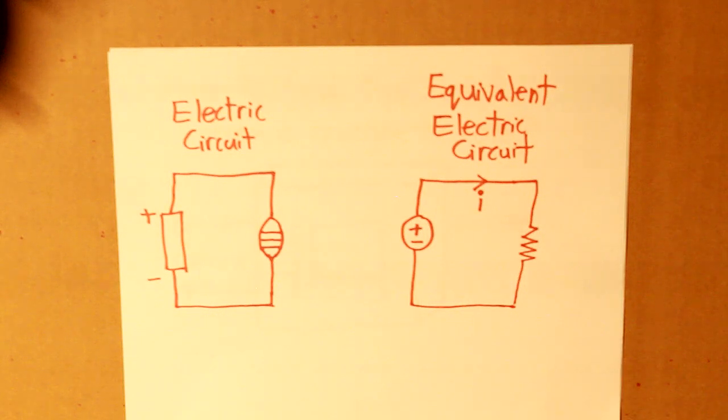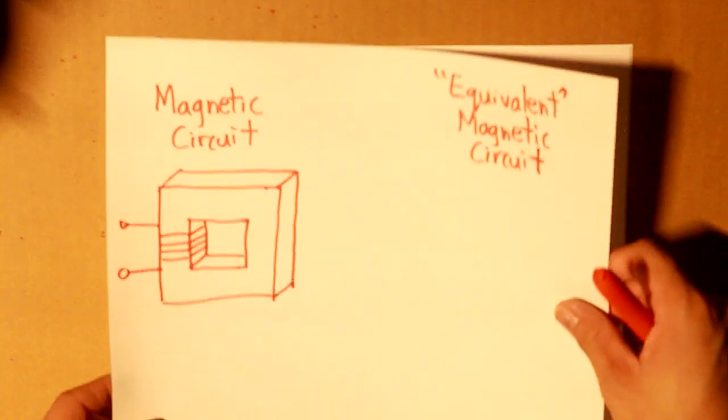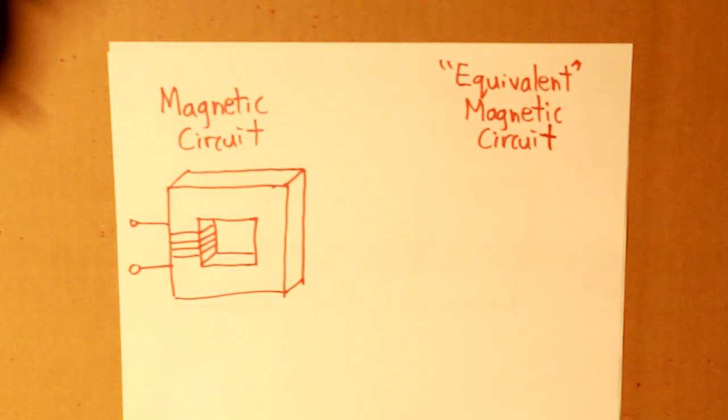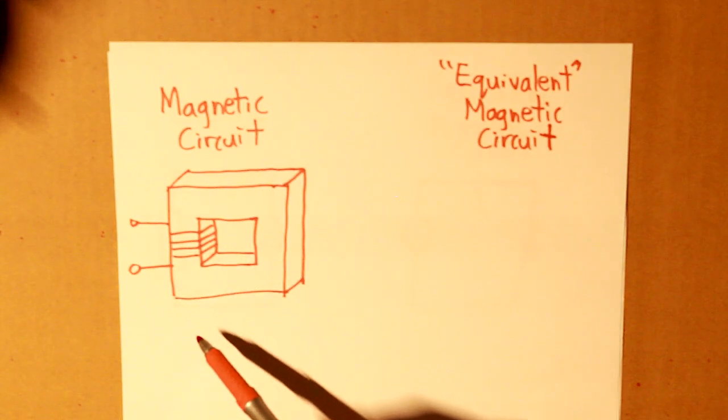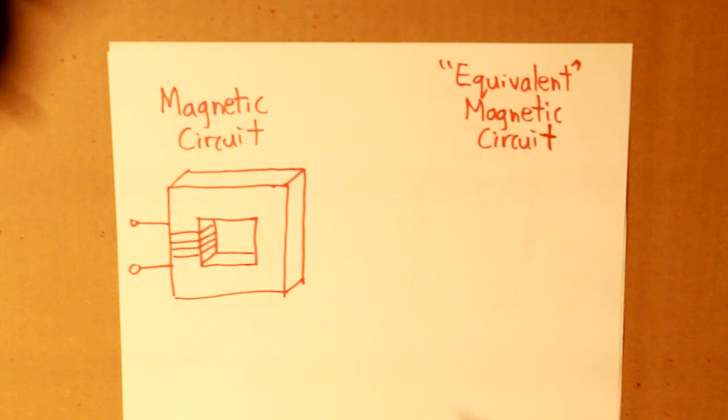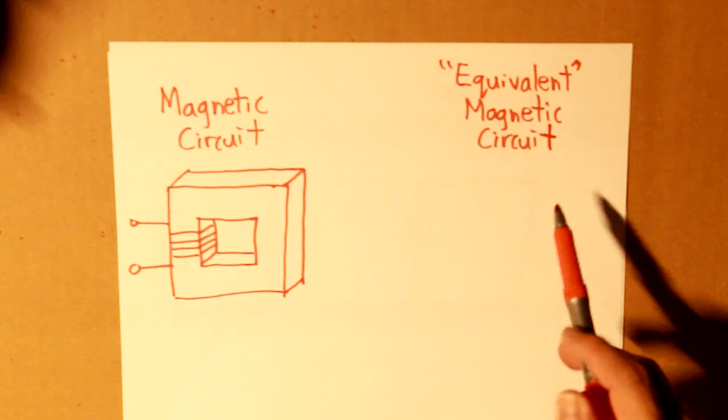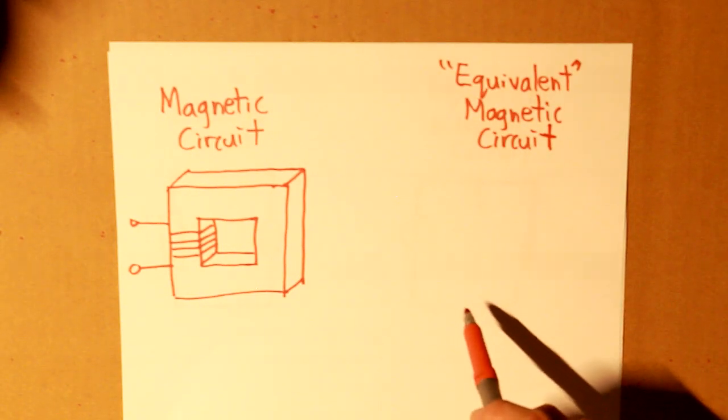Now you may be wondering, how is this related to the magnetic circuit? Well, to find our flux, we are going to have to draw our equivalent magnetic circuit, given the diagram here that I've shown you in the beginning of the video. So we have the equivalent magnetic circuit and this is how it will look like.